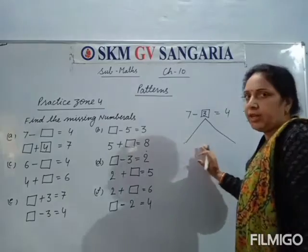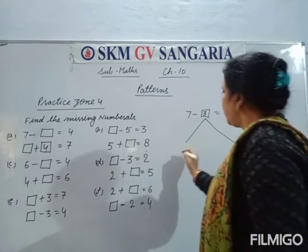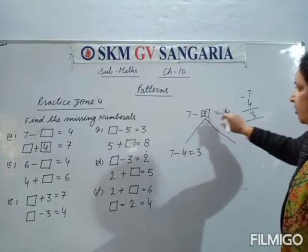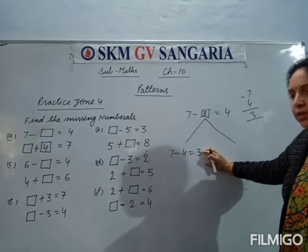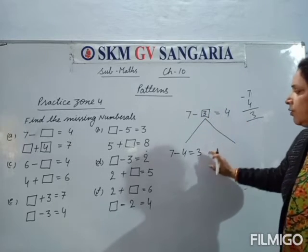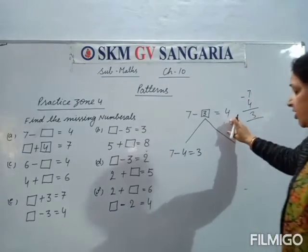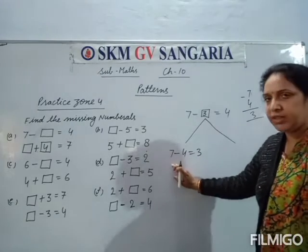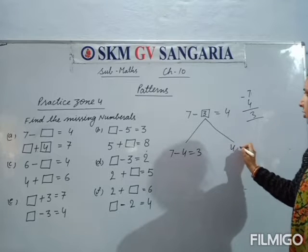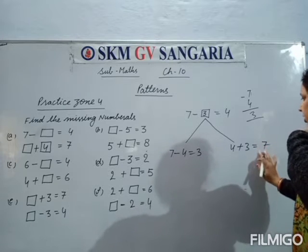One addition fact and one subtraction fact. Dekhe: 7 minus 3 is equal to 4. Toh yahaan hamaara 7 minus 4 is equal to 3. Agar hum 7 minus 4 karenge, toh hume 3 milega. Agar hum 7 minus 3 karenge, toh hume 4 difference milega. Toh yeh iske factors ho gaye. Agar yeh subtraction fact hai, agar ek jo hoga, agar doosra kya hoga? Addition fact.